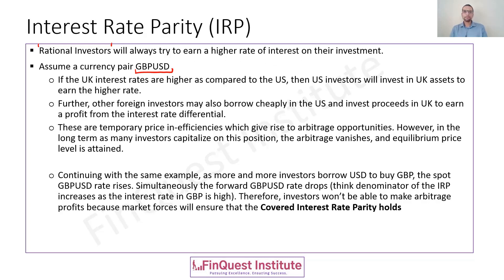Now this can result in temporary inefficiencies. There will definitely be a temporary price inefficiency which can give rise to certain arbitrage opportunities. However, when more and more people start capitalizing on that arbitrage opportunity, that opportunity is going to vanish. When the arbitrage opportunity vanishes, that means in the medium to long term, equilibrium price levels are going to prevail.